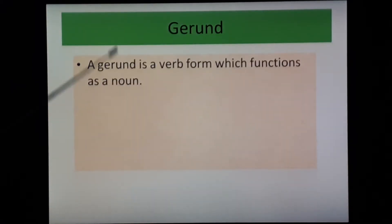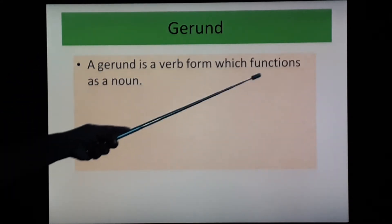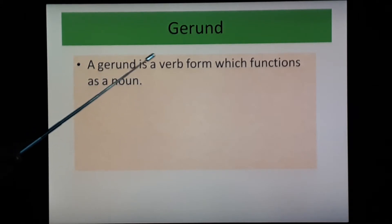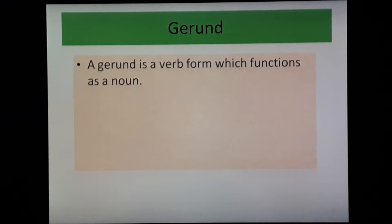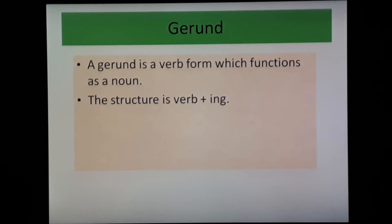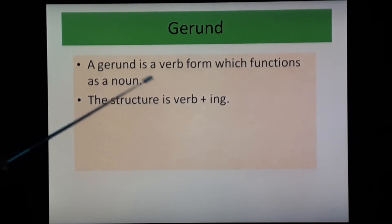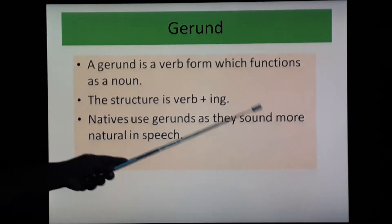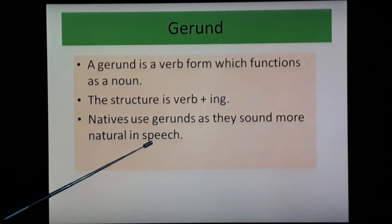First, gerund. A gerund is a verb form which functions as a noun. Here, a verb with -ing form works as a noun or subject — that is a gerund. The structure is verb plus -ing. Natives use gerunds as they sound more natural in speech.